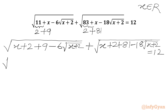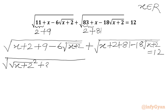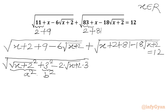Now we can write our radicands using the perfect square identity. We write square root of x plus 2 squared, giving x plus 2. Then 9 is 3 squared, and the cross term is 2 times square root of x plus 2 times 3. Setting a equals square root of x plus 2 and b equals 3, we get a squared plus b squared minus 2ab, which is the identity for a minus b whole squared.